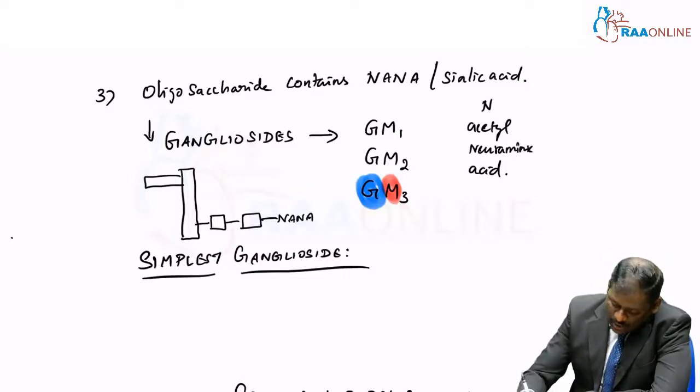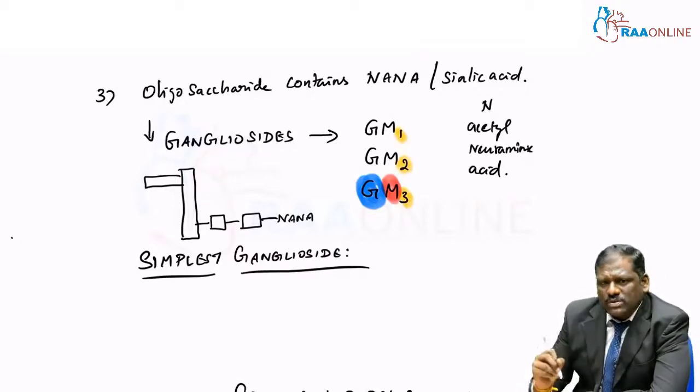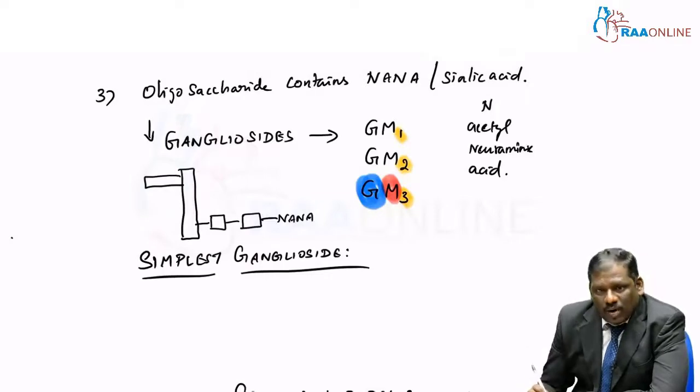And this 1, 2, and 3, what are those numbers? These numbers are the one which actually denotes the chromatographic mobility of these kind of gangliosides. When these gangliosides are present on a chromatographic chamber, they actually start moving. The 1, 2, and 3 actually denotes the chromatographic mobility of those gangliosides.